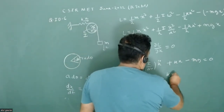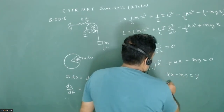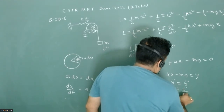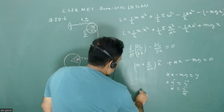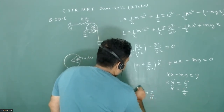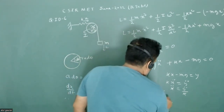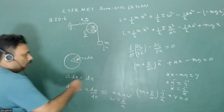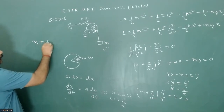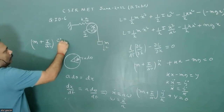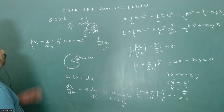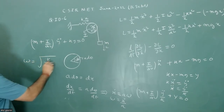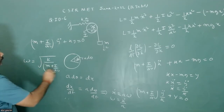To simplify, substitute y = k x − mg, so x-double-dot = y-double-dot / k. The equation becomes: (m + I/a²) y-double-dot + k y = 0. This is simple harmonic motion, giving angular frequency omega = sqrt(k / (m + I/a²)).